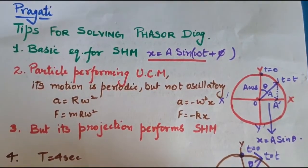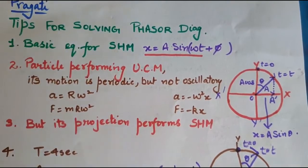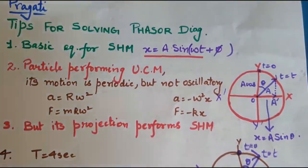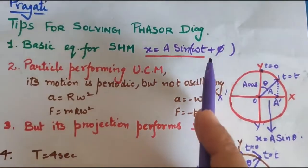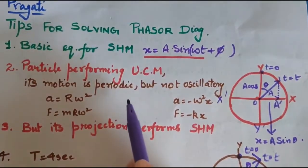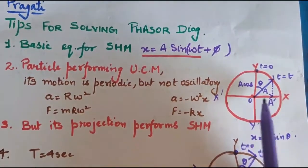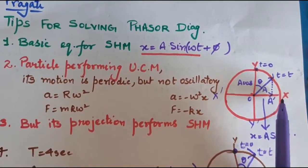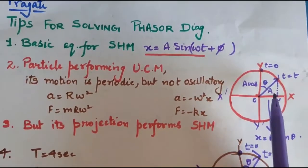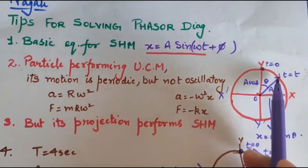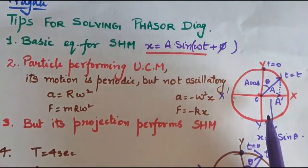Good morning. Today I'll be sharing a few tips for solving phasor diagrams in a few seconds. The first important thing you should know is the equation of SHM: x = a sin(ωt + φ). The second important thing — a particle performing uniform circular motion is periodic but not oscillatory, so you cannot say it is performing SHM. Actually, its projection on the x-axis or y-axis is what performs simple harmonic motion.